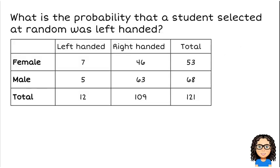Now let's have a look at a question. What is the probability that a student selected at random - so this is saying from all of the different students, I'm not looking at any particular group of them, I'm just looking from any student. What is the chance that they were left-handed?